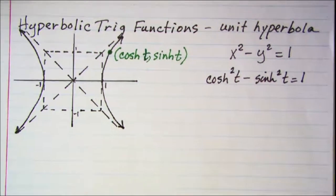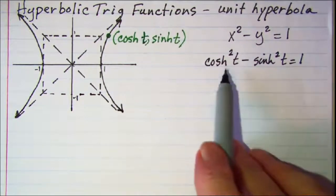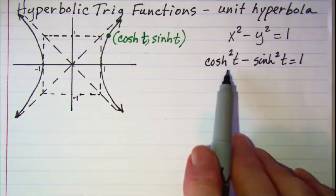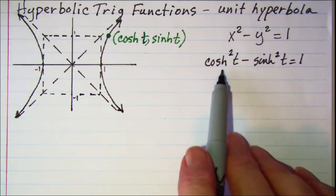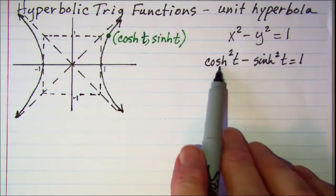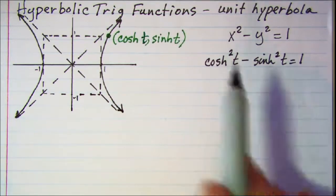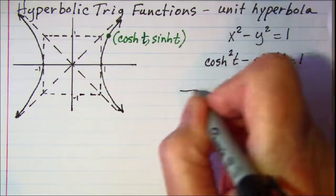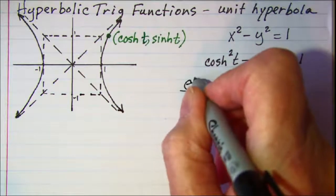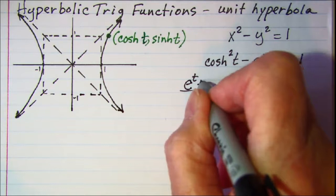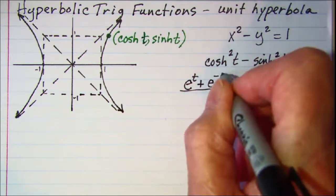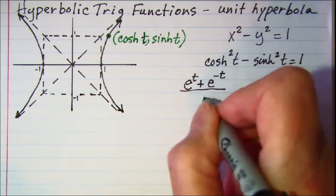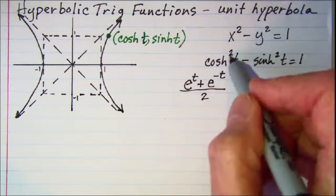Now let's use our definitions to prove that this is an identity. By definition the hyperbolic cosine of t is e to the t plus e to the negative t divided by 2 and then that's squared.